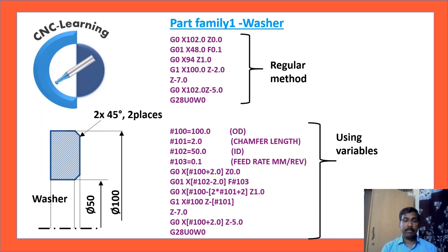Then rapid retract to G0 X[#100 - 2 * #101 + 2]. Why? Because 2mm is our chamfer, that is in #101. And since our X values are mentioned as a diameter, chamfer in diametrical notation would be 100 minus 2 times 2, that means 100 minus 4. So at Z0 position, adding another 2mm gives us 2 multiplied by #101 plus 2, meaning 4 plus 2, which equals 6 as the X value.